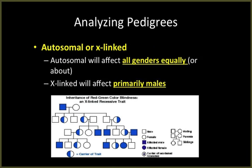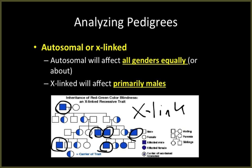Autosomal versus X-linked is much easier to determine: autosomal will affect all genders equally, or about equally, while X-linked will almost always affect males. You'll see many more males affected than females. Looking at the chart, six of the individuals affected are male and only one is female — that tells you this must be an X-linked disorder. If individuals are affected equally, the trait is probably autosomally inherited.